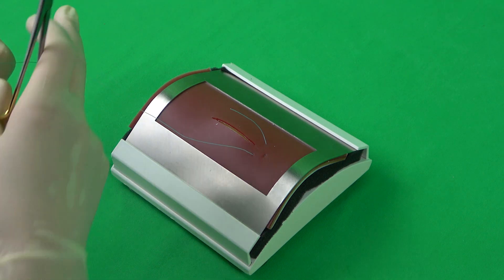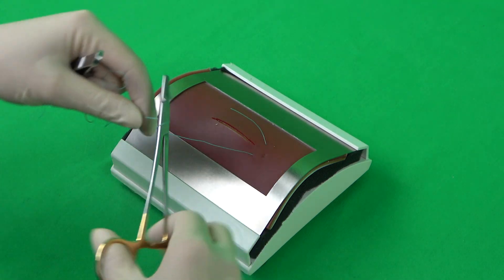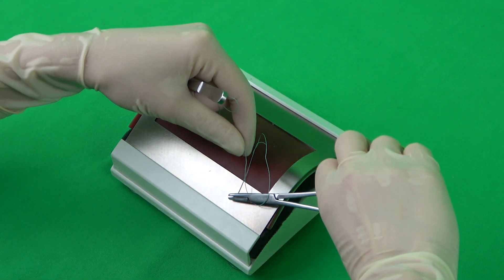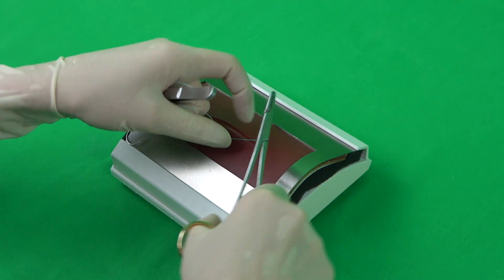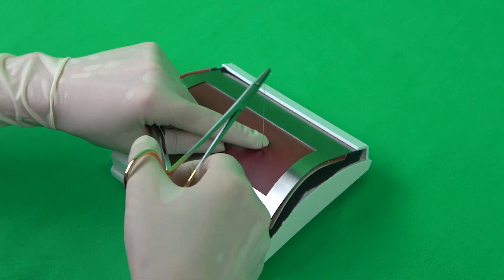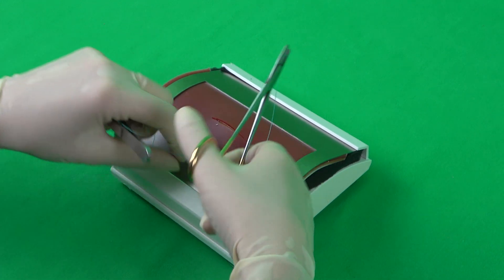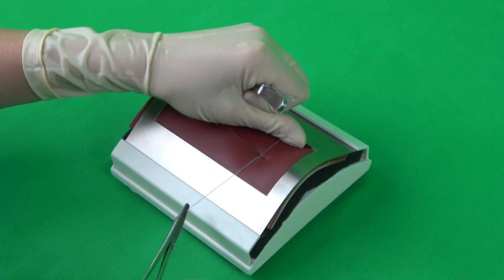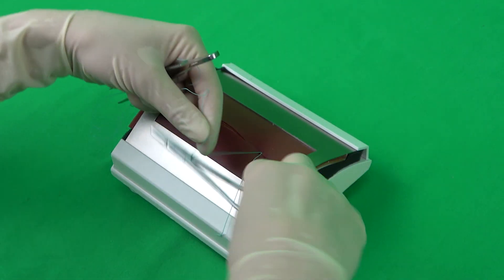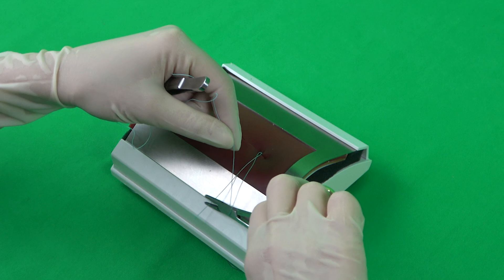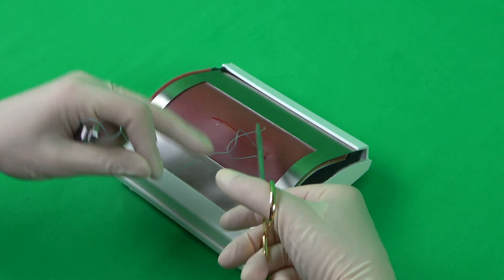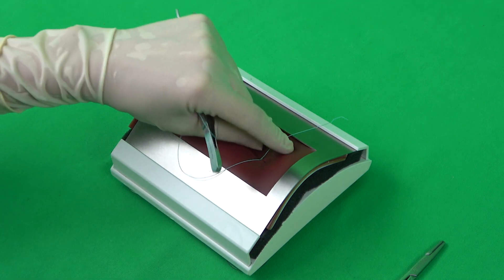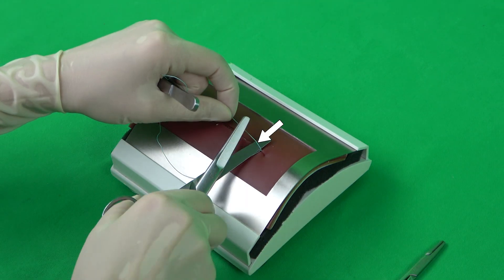The ends of the suture material can now be fixated with a surgical knot. It is also possible to utilize a slipknot for this, which is demonstrated in this video. Finally, the remaining thread can be shortened to one scissors blade's width.